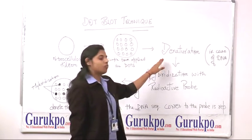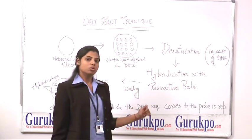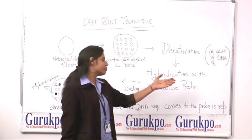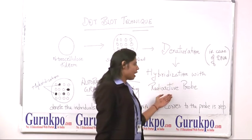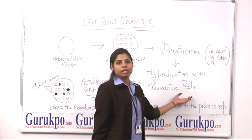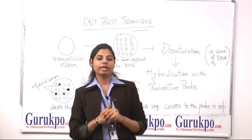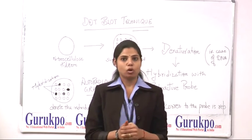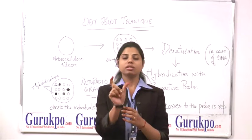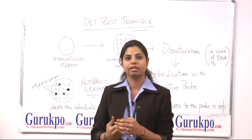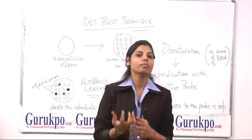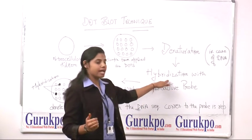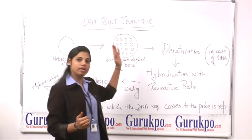After denaturation, we have to do hybridization — hybridization with a radioactive probe. This probe is designed based on the sequence we have taken, and then we hybridize it on this filter.